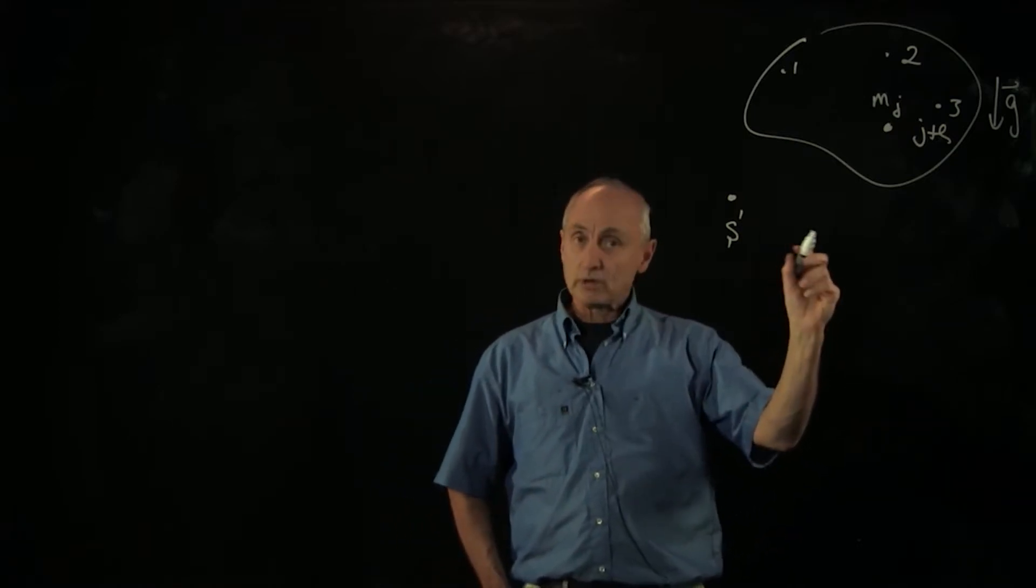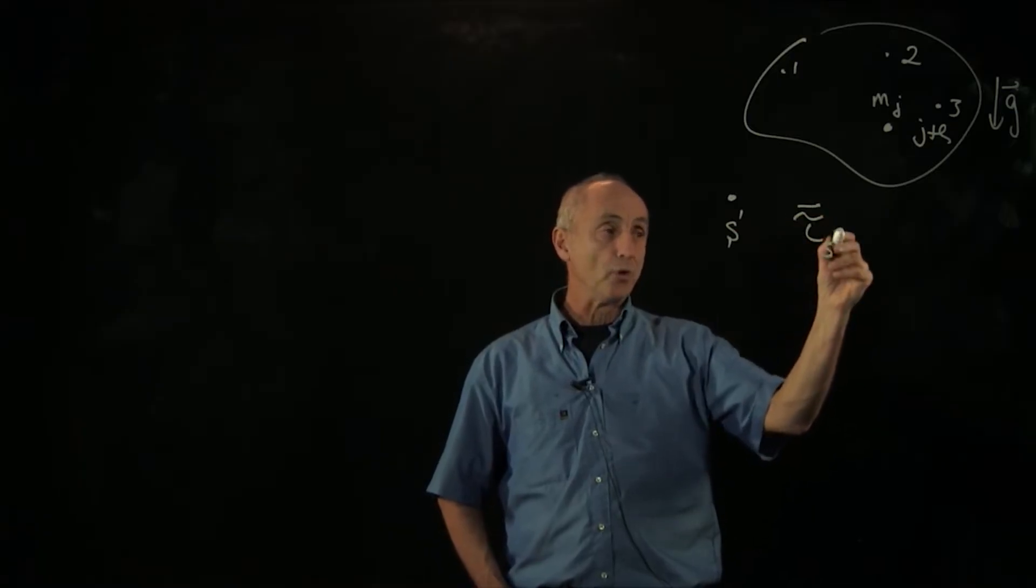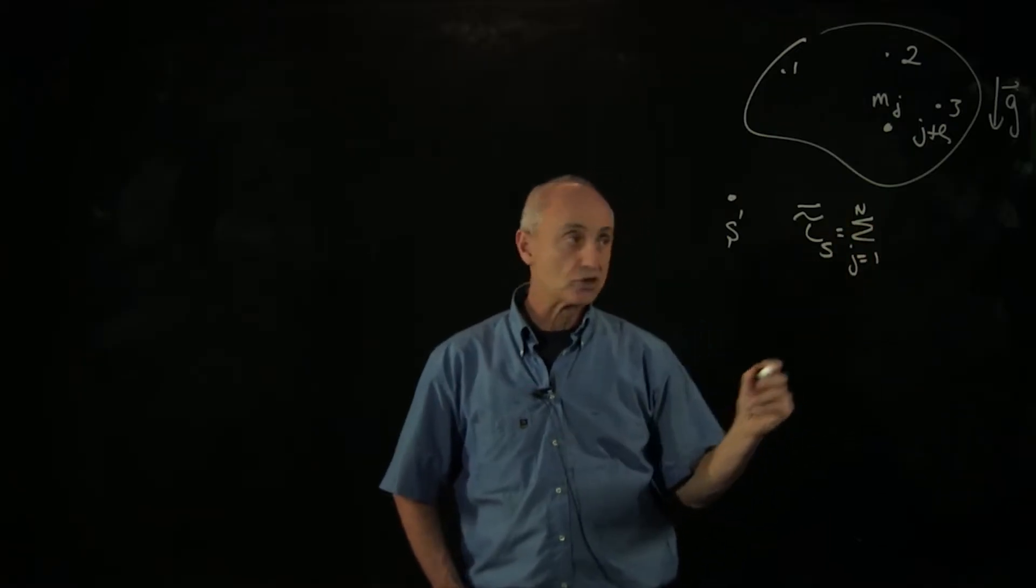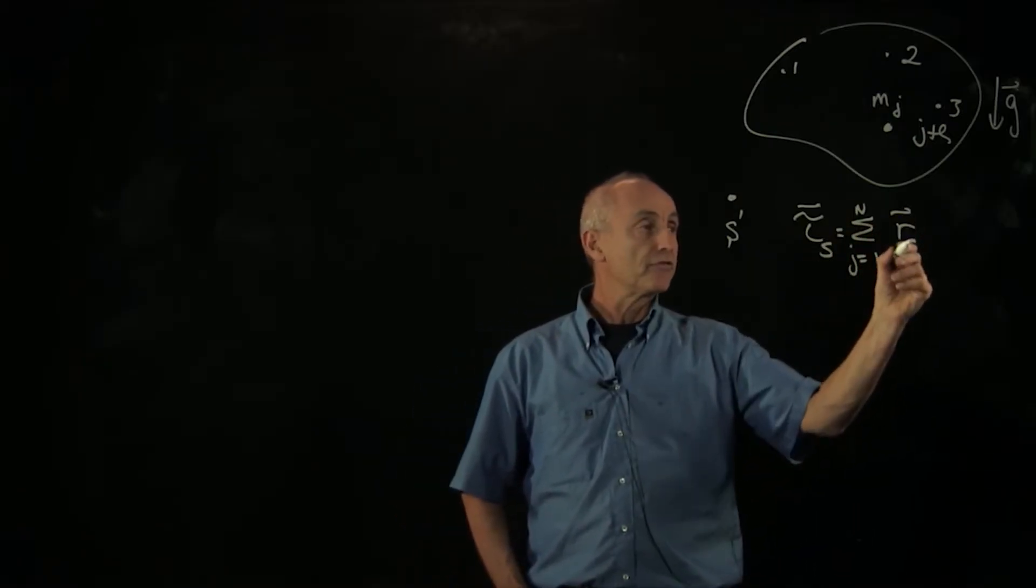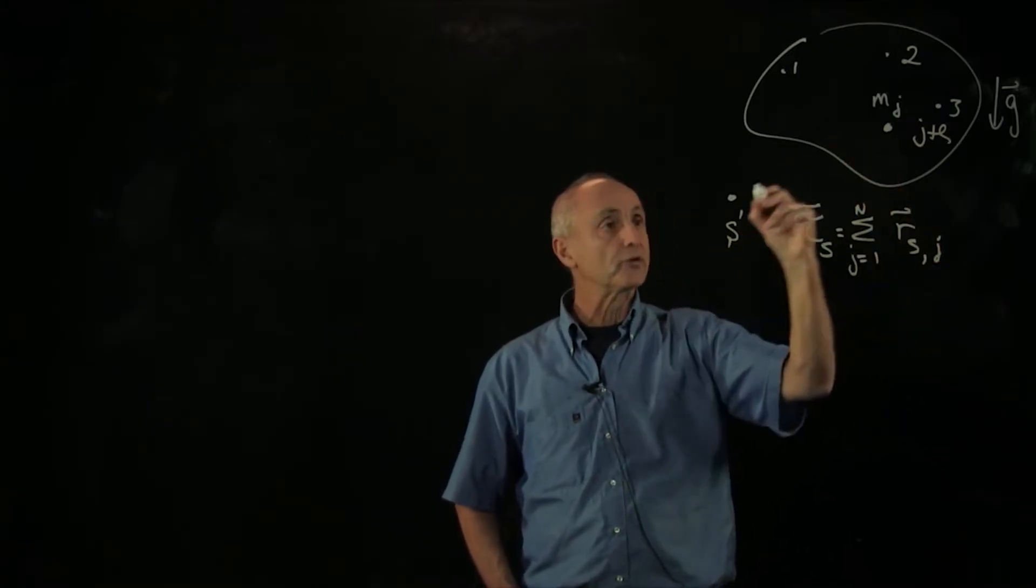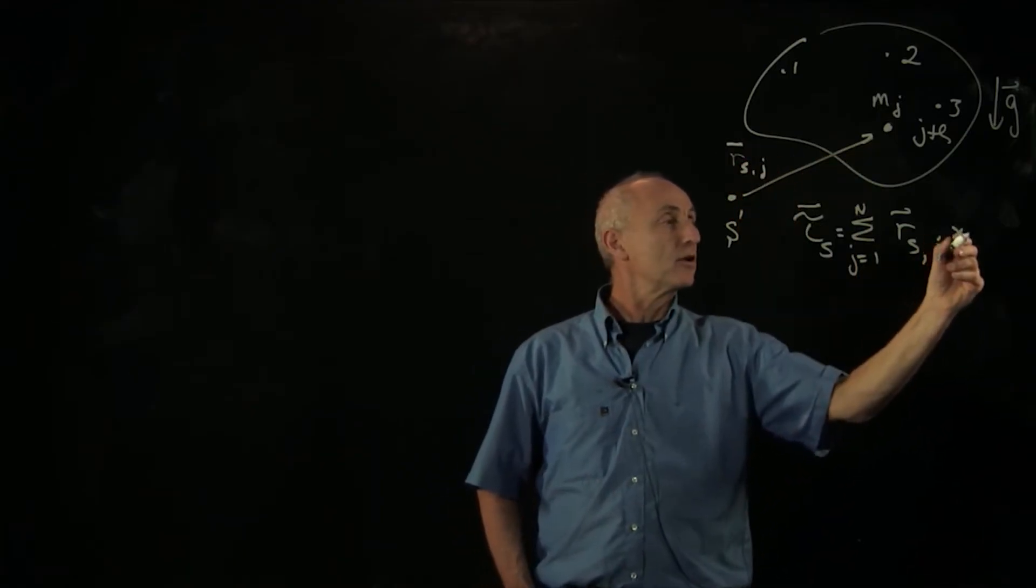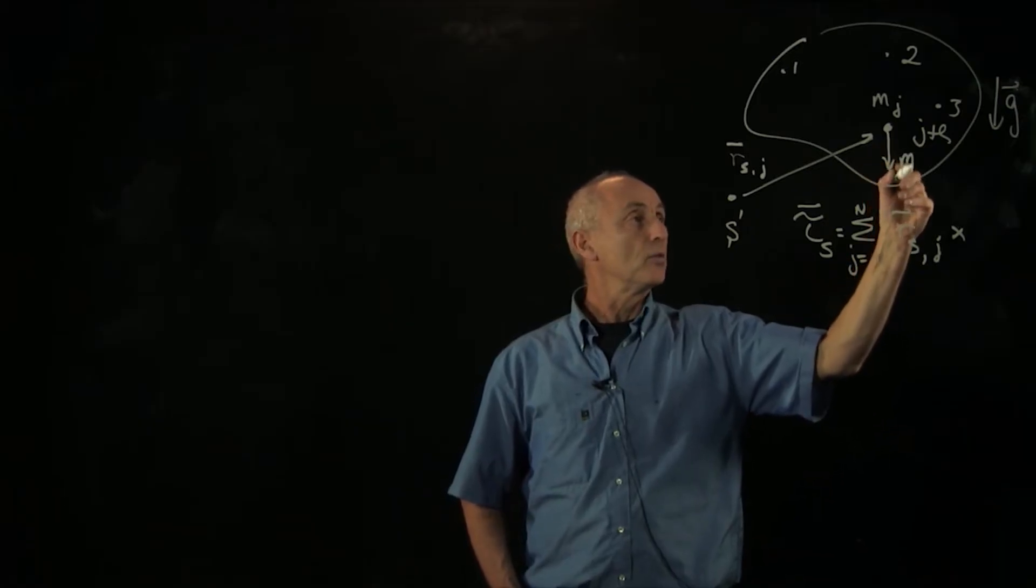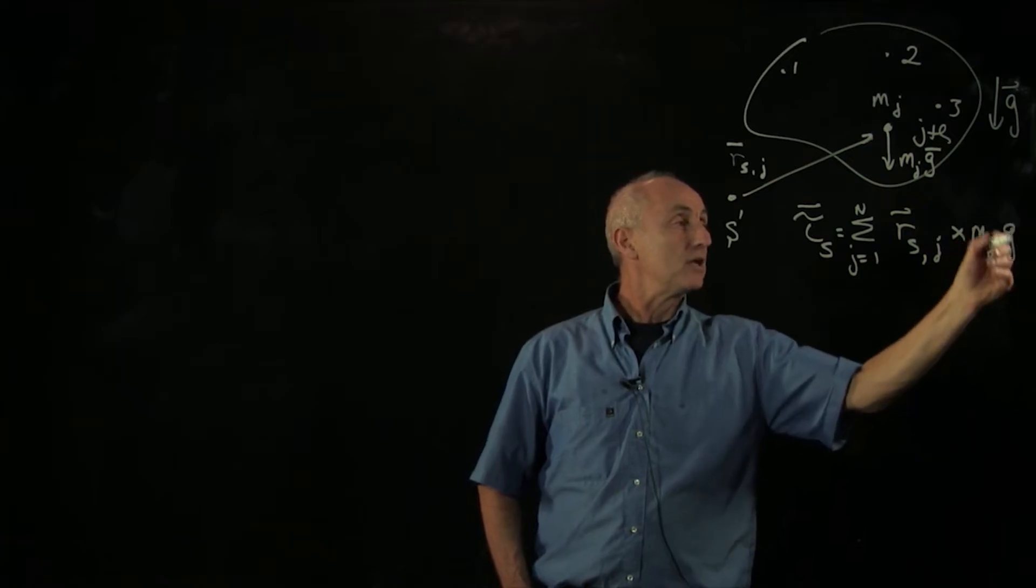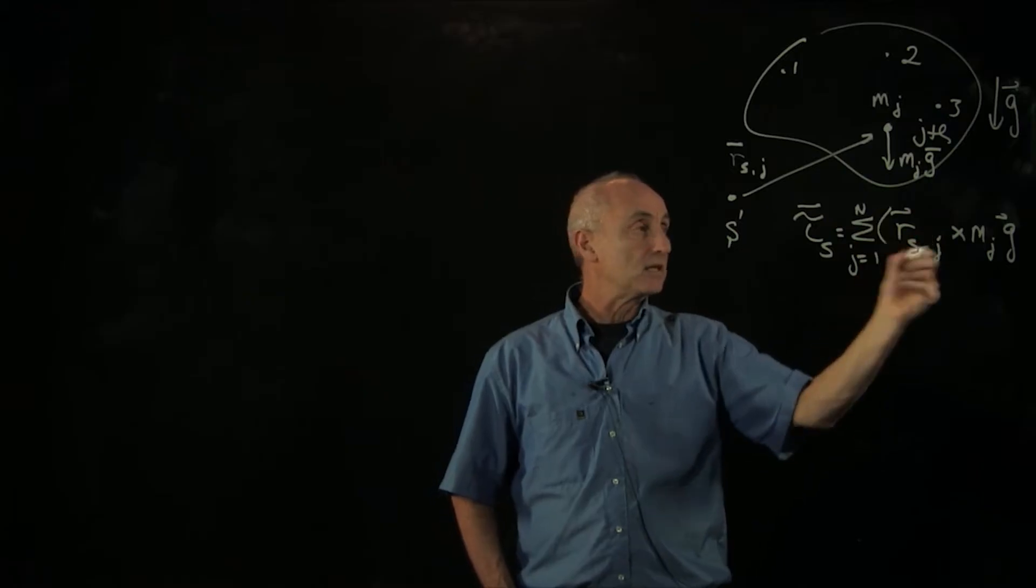Well, the way we'll analyze this is recall that the definition of torque about some point, now we have n particles labeled by index j, it's a vector from the place we're calculating the torque to where the j-th particle is located. So we draw that vector rsj and we cross that with the force that's acting on the j-th particle, which in this case is the gravitational force mjg. And this is the torque about s. It's this complicated sum.